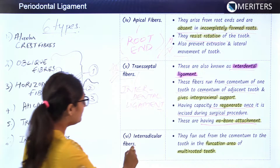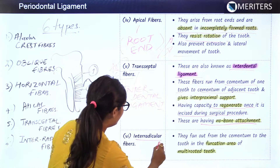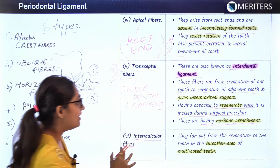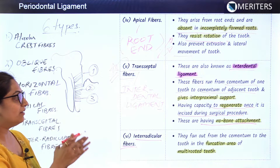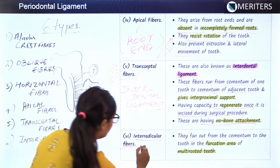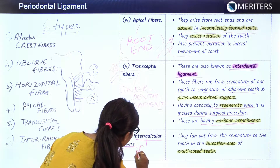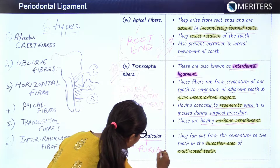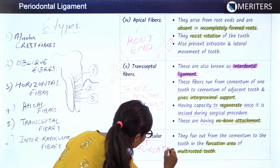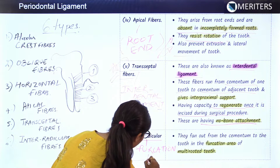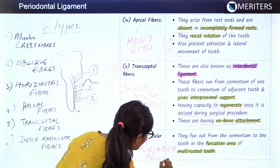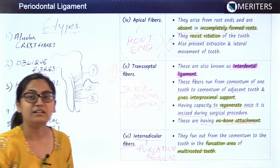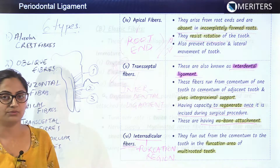The sixth fiber is the interradicular fibers. As the name suggests, they run from the cementum to the tooth in the furcation region, and are present in multi-rooted teeth only.